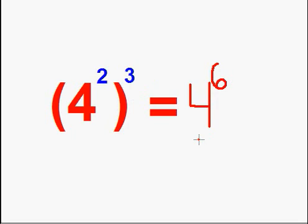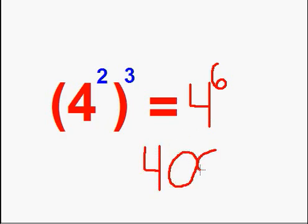If you want to evaluate this out, you'll do 4 times itself 6 times — or in other words, 4 times 4 times 4 times 4 times 4 times 4 — to give you 4,096.